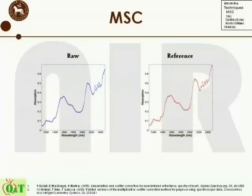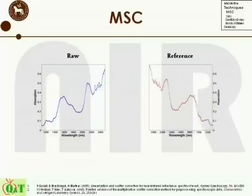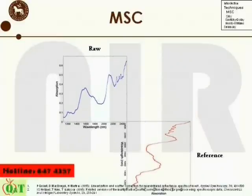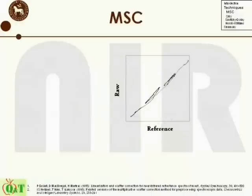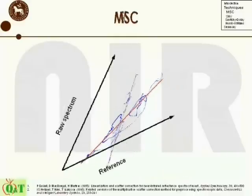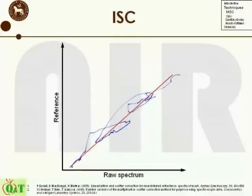First we'll have a look at MSC and ISC. In order to do the corrections for both of these, you have to plot the raw spectrum versus the reference, or vice versa. The following animation shows how this plot is made. After this plot has been established, the best-fitted line according to regular least squares regression is found. For MSC, the reference spectrum is along the x-axis and the raw is along the y-axis. The case is opposite for ISC, and thereby the name inverse scatter correction.